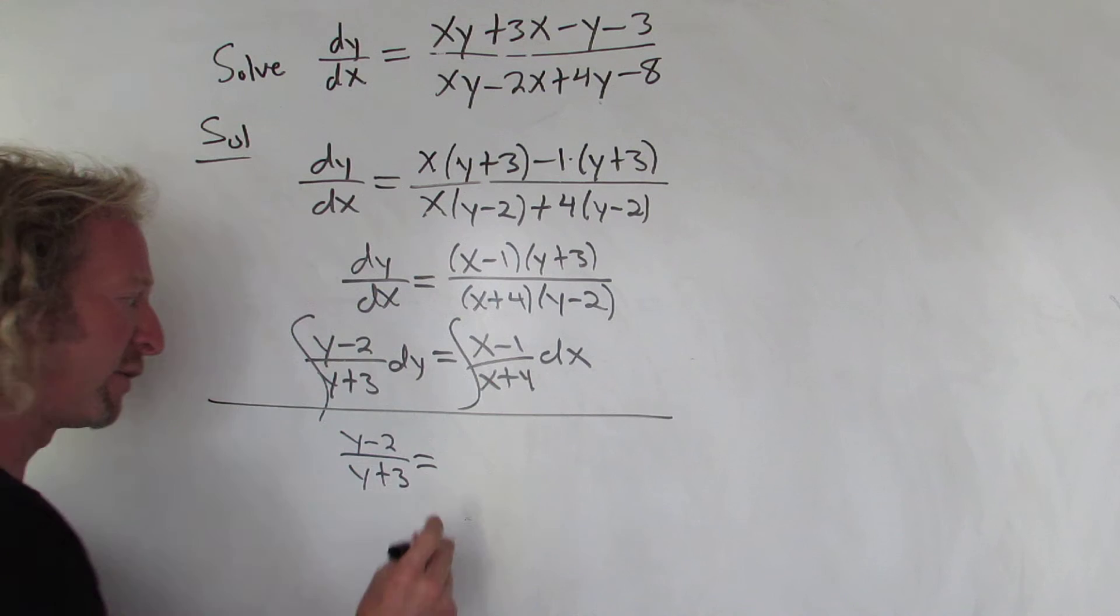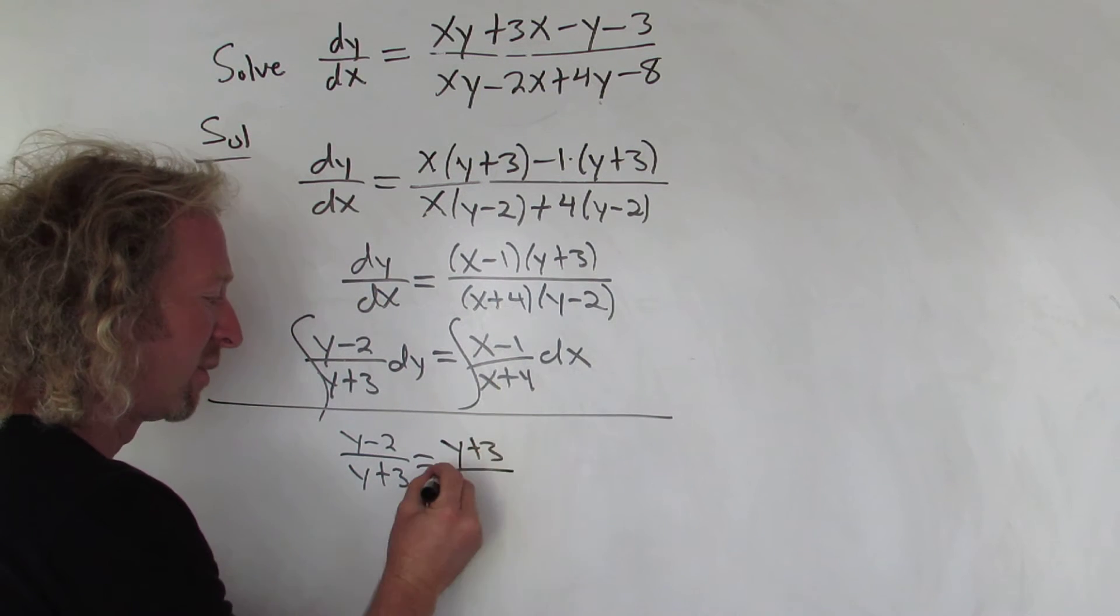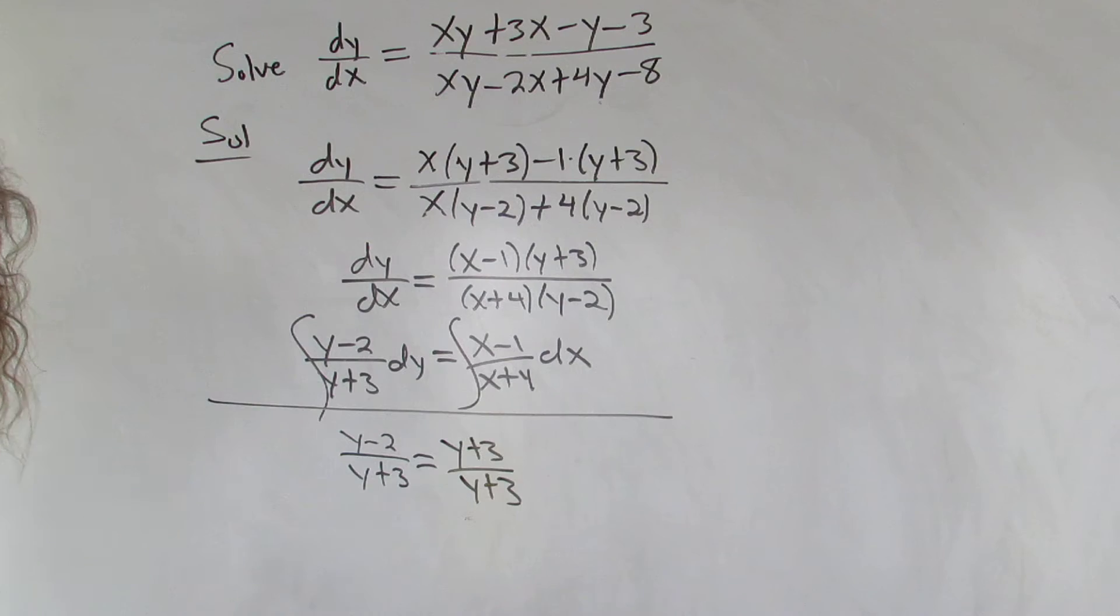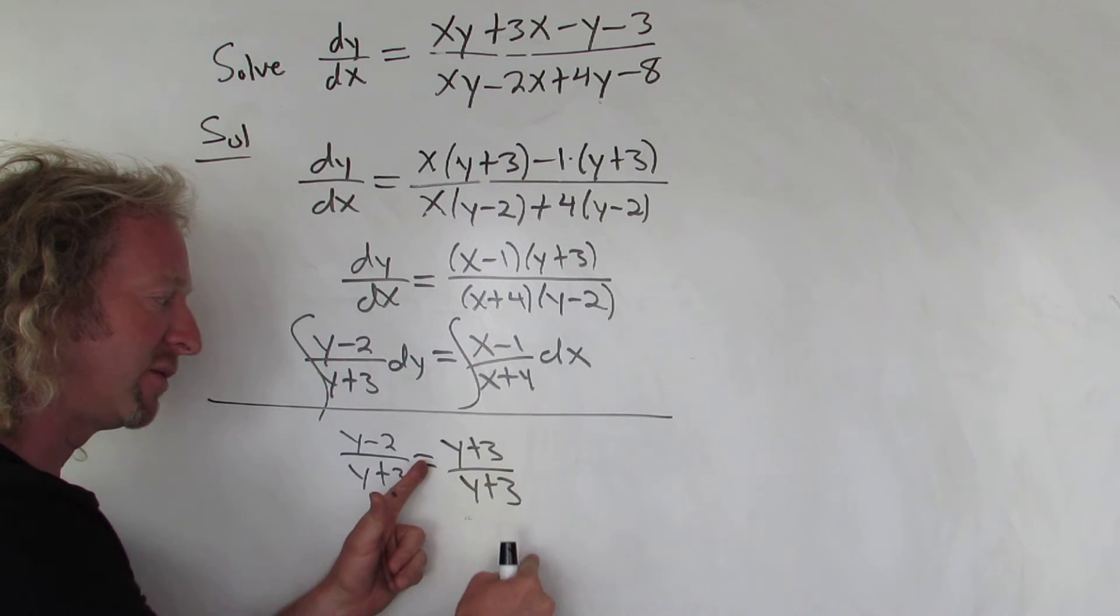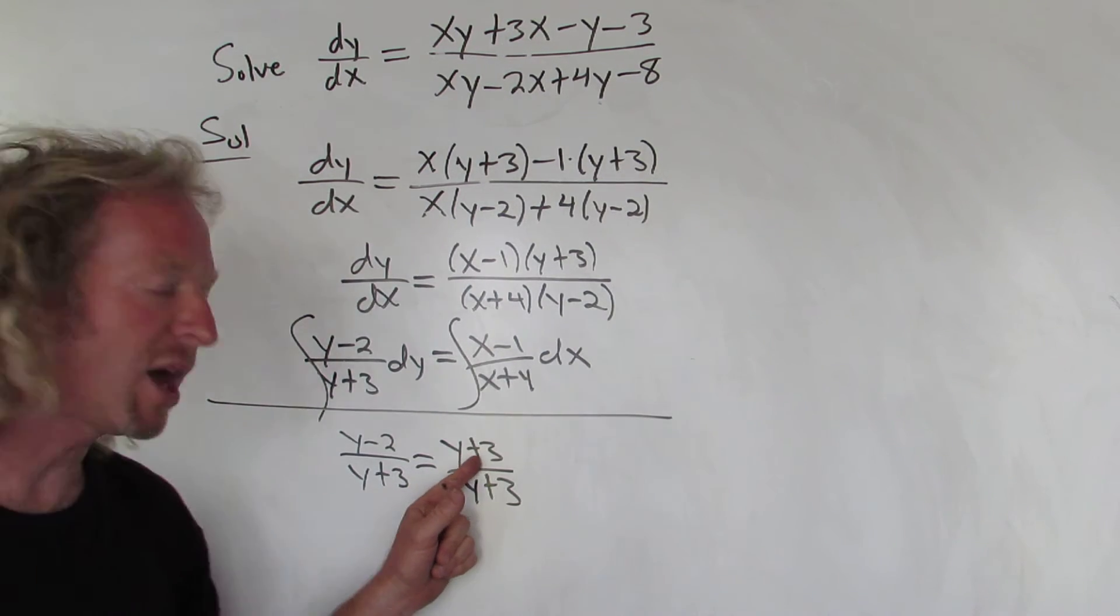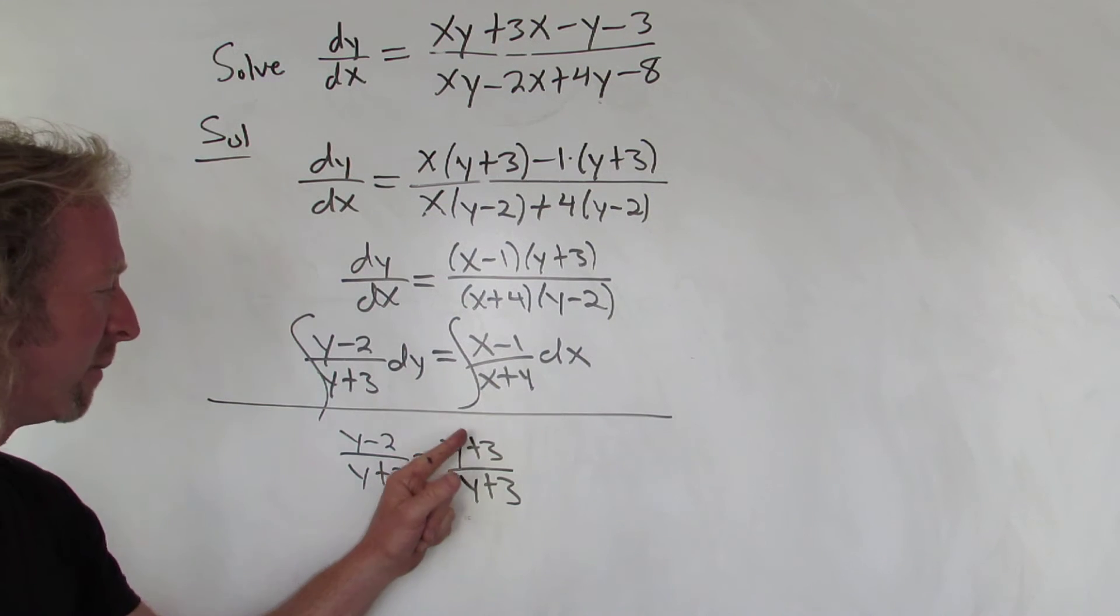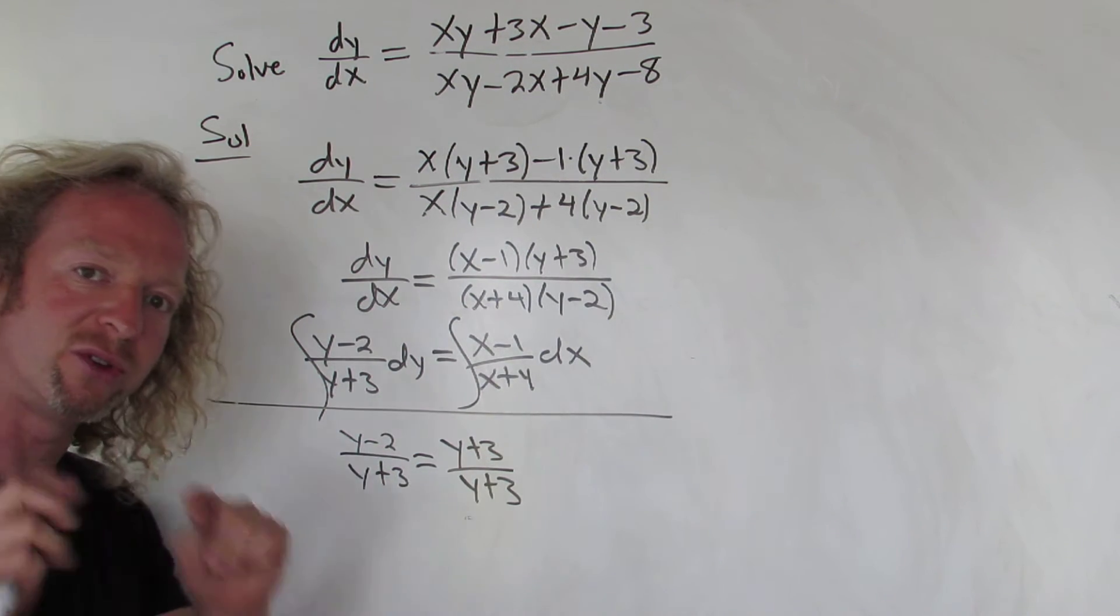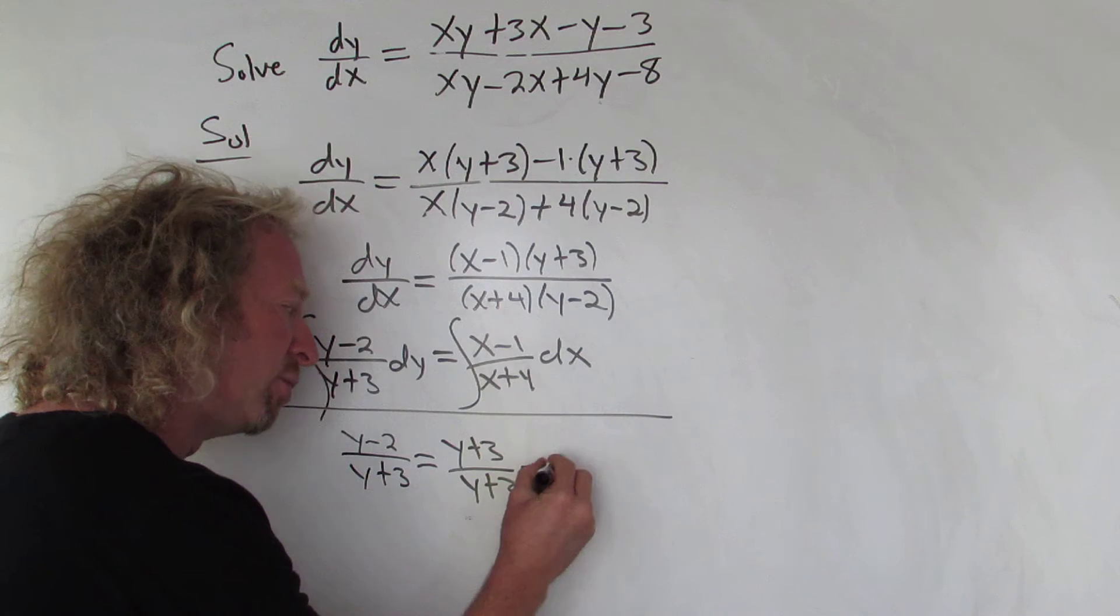It would be really nice if this was (y+3)/(y+3), so what we do is we write it down because we do whatever we want. So (y+3)/(y+3), these are obviously not equal, but now it's going to cancel and give us one. To make this equal you have to ask yourself, how do you get from three to minus two? You subtract five. So boom, you put a five there.